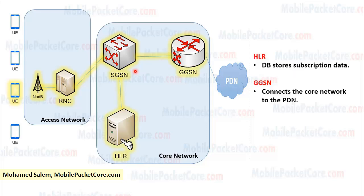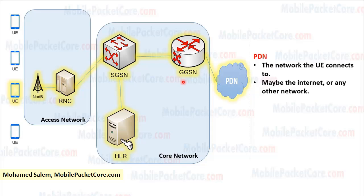The SGSN connects to the HLR and the GGSN. The HLR is a database that stores subscription data for all users. And the GGSN connects the core network to the PDN. The PDN is the network the UE would like to connect to, if it is the internet or any other network.